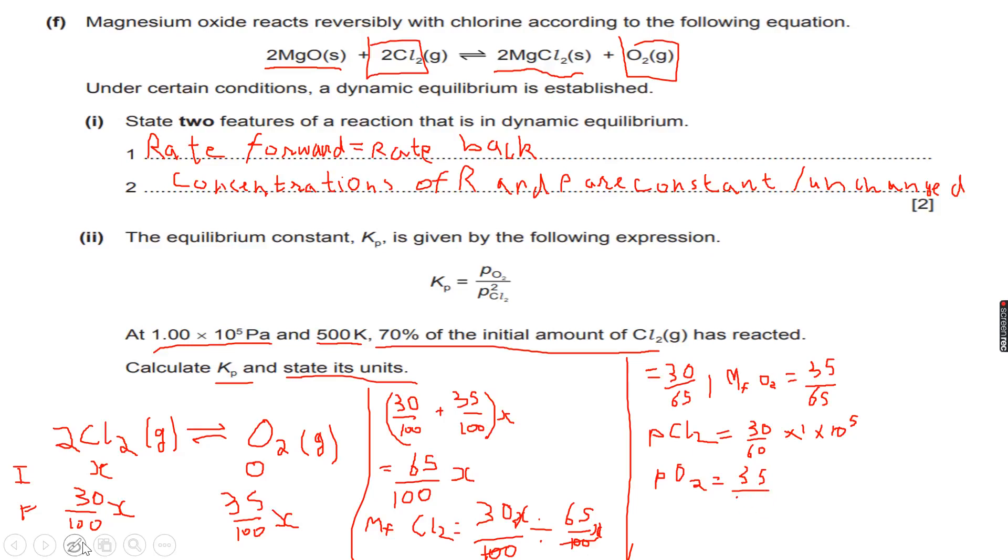Sorry, I made a slight mistake. It will become 65 and 35 by 65, which is the mole fraction of O2 into the total pressure, which is 1 into 10 to the power of 5. So this is the partial pressures of Cl2 and O2.